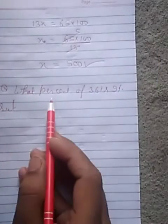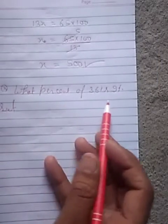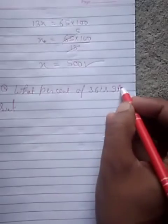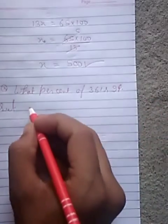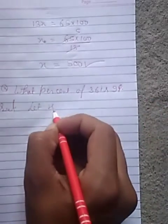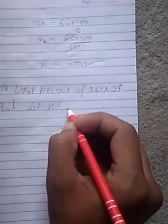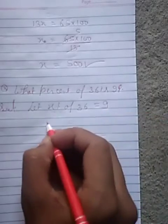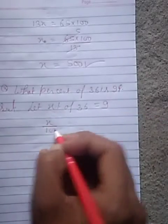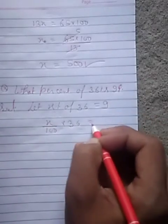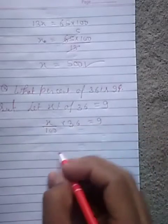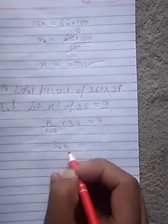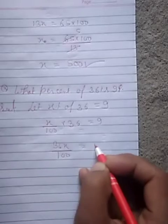Student, what percent of 36 is 9? Clear students? So student you will write, let X percent of 36 is equal to 9. X, remove this symbol, 100 into 36 is equal to 9. 36 multiplied by X, 36X upon 100 is equal to 9.